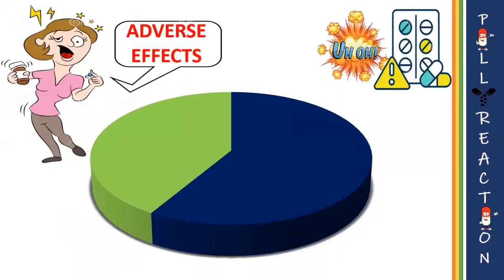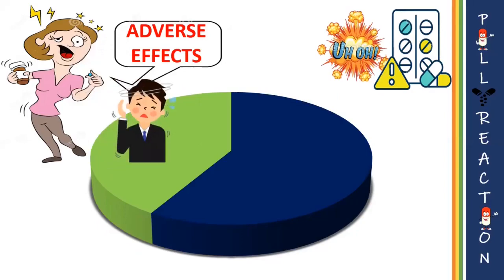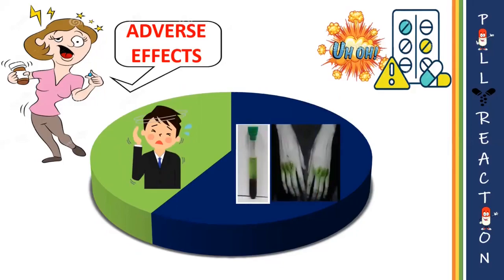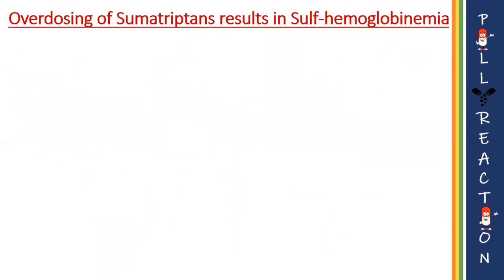Moving on to the adverse effects: clinical side effects of sumatriptan are usually mild, causing dizziness, weakness, etc. However, overdosing of sumatriptan results in a rare condition known as drug-induced sulfhemoglobinemia, which makes our blood appear dark green or blue in color.